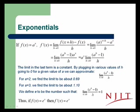We can convince ourselves that this limit ought to be increasing as a increases, and therefore, we can suppose that there's a number between 2 and 3 where the limit as h goes to zero of a to the h minus 1 over h will be exactly 1.